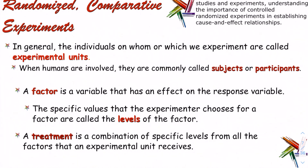These are randomized comparative experiments. The individuals on whom we experiment are called experimental units. If they involve humans, we call those humans subjects or participants. If they're rats or pieces of cheese, those are just experimental units. A factor is a variable that has an effect on the response variable. The specific values the experimenter chooses for a factor are called levels — in a medical study, the levels would be the dosage. A treatment is a combination of specific levels from all factors that an experimental unit receives.